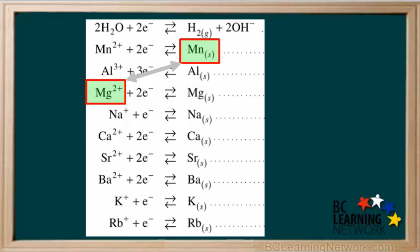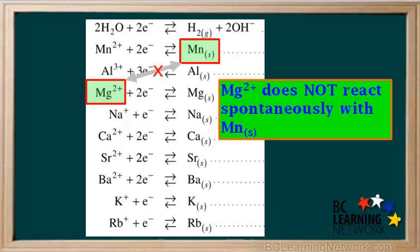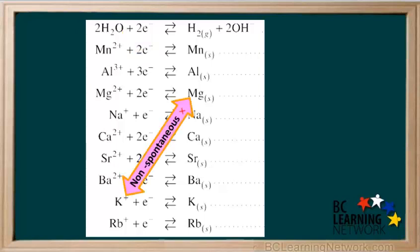Now let's say we mix Mg2+ with manganese metal, Mn. Mg2+ will react spontaneously only with species on the right below it. And manganese metal Mn is above it on the right, not below it. So we mark the diagonal line between Mg2+ and Mn with a red X, and we state that Mg2+ does not react spontaneously with Mn metal. If a backslash can be drawn between two species, the reaction is spontaneous; but if a forward slash can be drawn, the reaction is non-spontaneous.